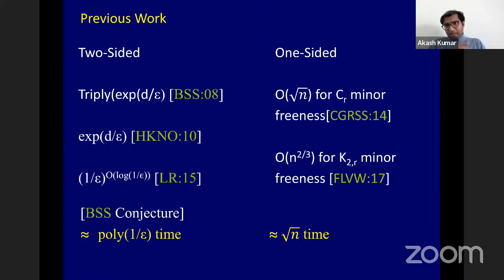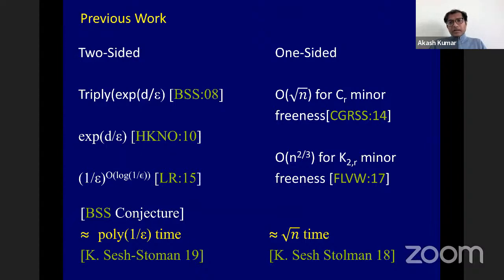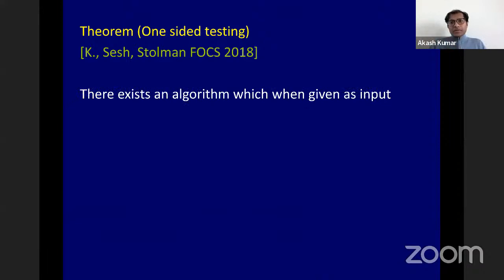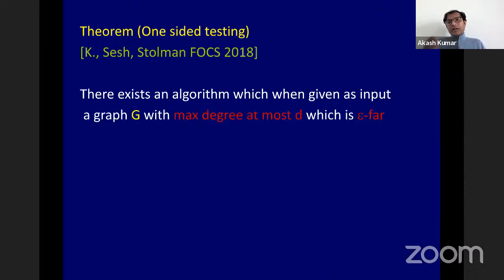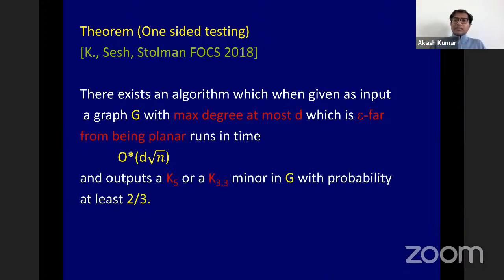I'm hiding the dependence on epsilon. Let me show you the formal theorem for the one-sided case. There is an algorithm which, on input a bounded-degree graph that is sufficiently not planar, runs in roughly root n time and outputs for you a K5 or K_{3,3} minor hiding inside this graph with good probability.